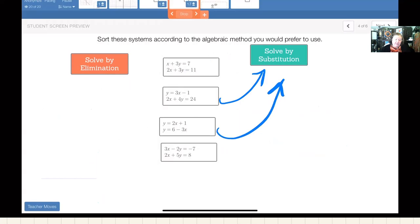I would definitely put this one over here. But that's my preference. Somebody else could maybe say, well, I want to get this x by itself. And I could move this 3y to the other side and make this x is equal to negative 3y plus 7 and then solve it by substitution. And that would be true too.